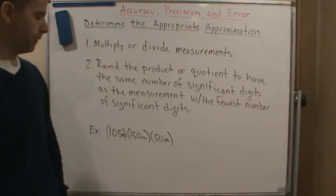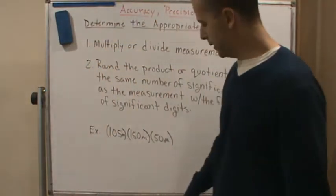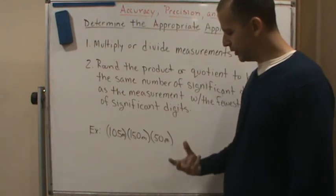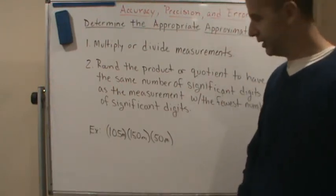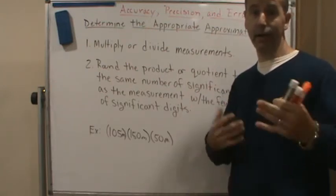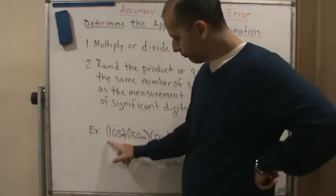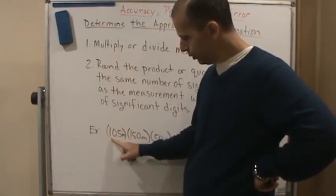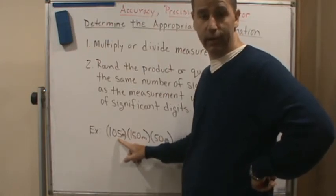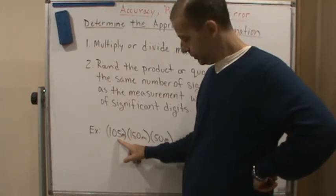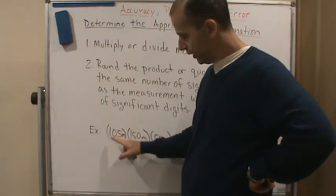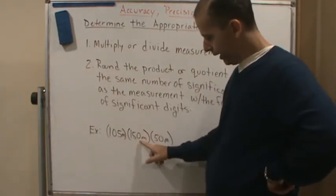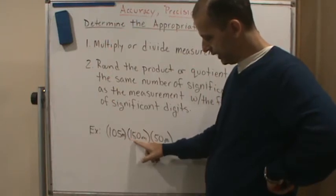Here's an example. We have three measurements, all in meters — good. We want to multiply them all together, so we need to find the fewest significant digits. The first measurement has three significant digits: we start at the leftmost non-zero digit and count through to the rightmost non-zero digit, including zeros in between, giving us one, two, three. The second measurement has only two significant digits. The third has only one significant digit.